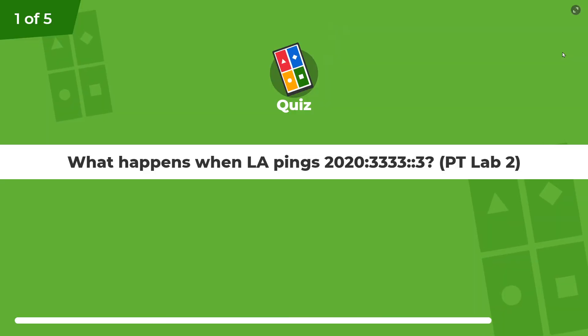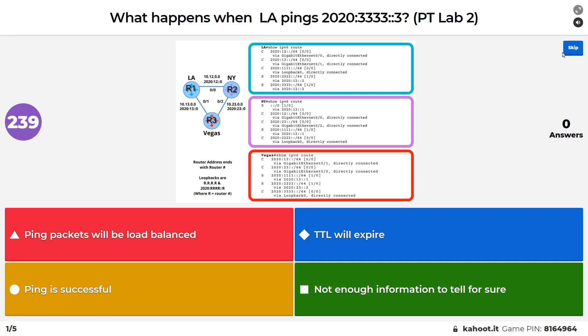Question one: What happens when LA, which is router one, pings 2020:3333::3?